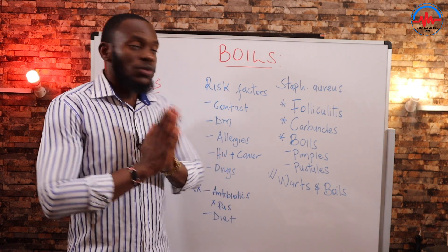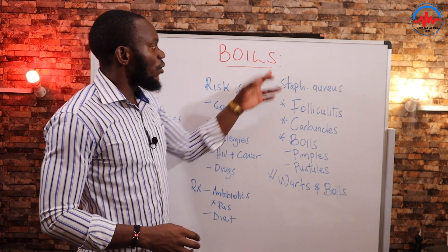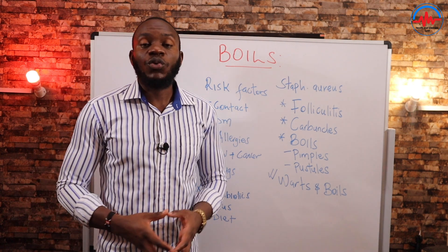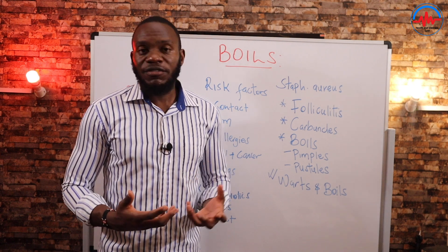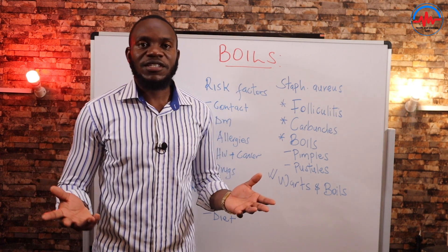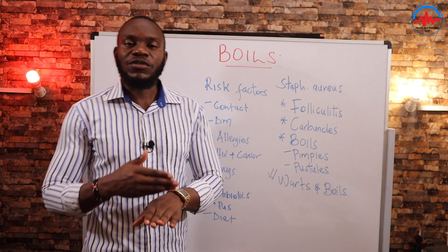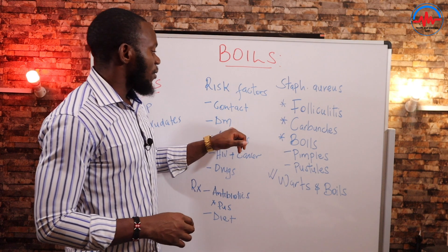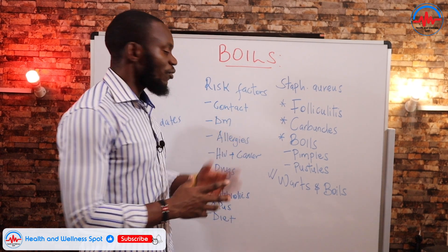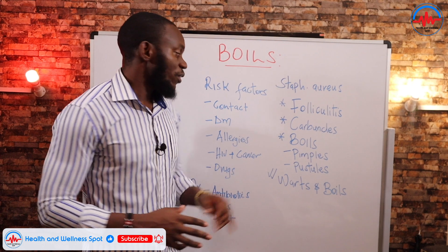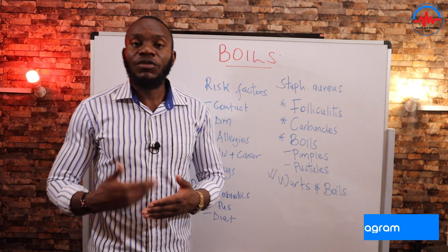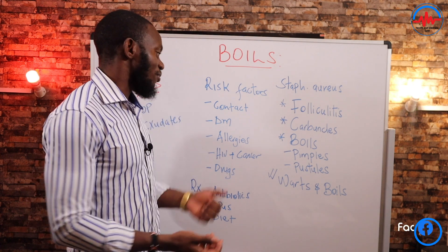Risk factors for boils and Staphylococcus activity: number one is contact — you have to get in contact with a person who has Staphylococcus, which is why you are advised not to get close to people who have boils, especially if your immunity is low. Anytime your skin has a breakage or opening, your risk increases. Number two is diabetes mellitus — sugar lowers your immunity in all forms. When you head into diabetes, it kills your immunity, and then every bacteria — even normal flora — becomes opportunistic and can affect your health.